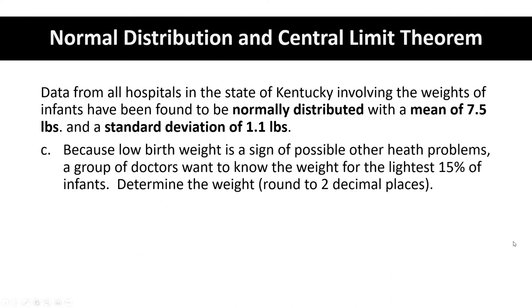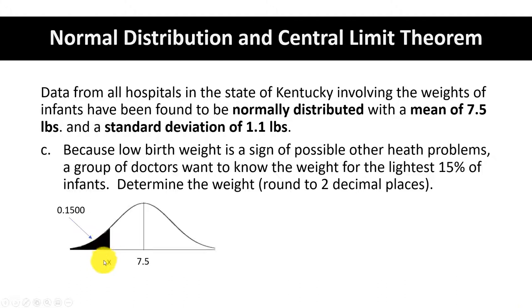Part C: this time we want to find a weight measured in pounds. We know that the area to the left of the z-score is 15 percent, 0.15. Let's draw a picture — we want to find what weight x corresponds to the bottom 15 percent of weights. In order to find x, we first have to find the z-score where area to the left equals 15 percent.